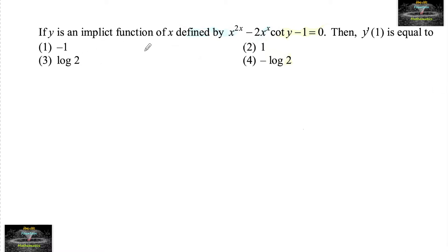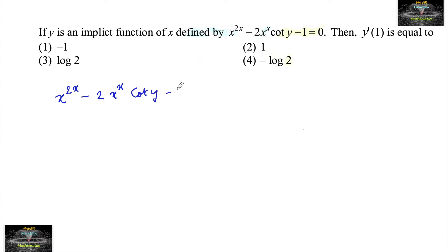If y is an implicit function of x defined by x to the power of 2x minus 2x to the power of x cot y minus 1 equals to 0, and we need to find y dash at x equal to 1.